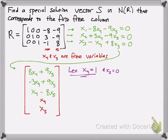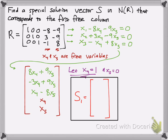What we're going to do is set x4 equal to 1 and set all remaining free variables equal to 0 — which is x5 in this case. You simply plug in x4 = 1 into the matrix representing the solutions, and you'll get your special solution for the first free column, S1. So: 8 times 1 plus 0 is 8; negative 3 times 1 is negative 3; 1 minus 0 is 1; x4 is 1; and x5, the remaining free variable, is 0. That gives you x1, x2, x3, x4, x5 in order. That's your special solution for the first free column.